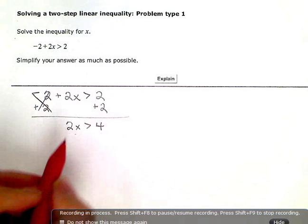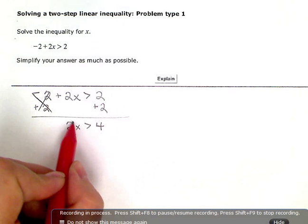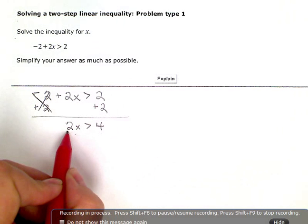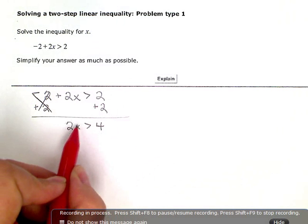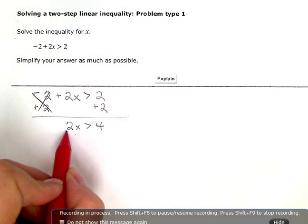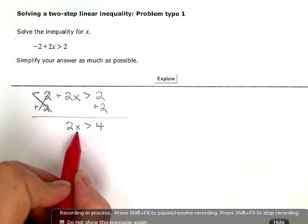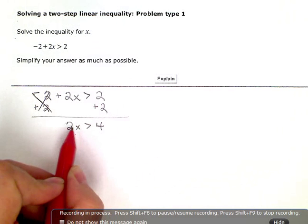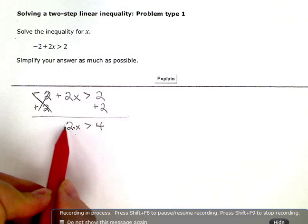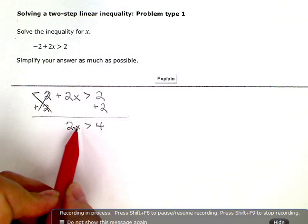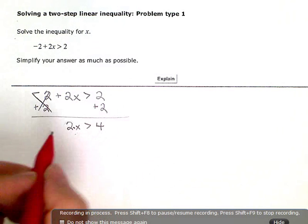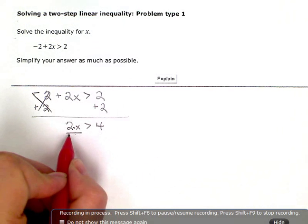The last thing I do is eliminate the coefficient, the number that's multiplied directly to the variable. Right now, this is 2 times x. So the opposite of a times by 2, or the inverse, is a divide by 2.